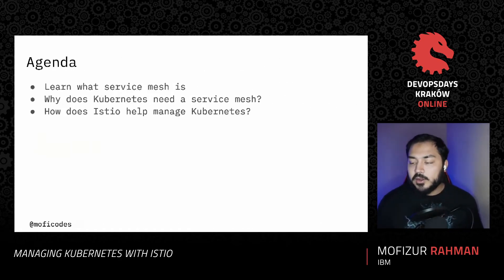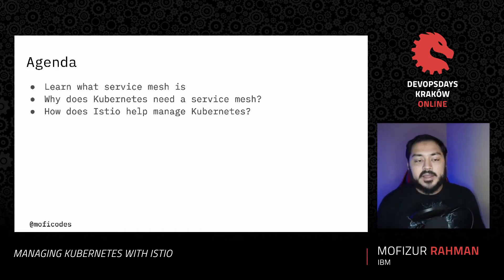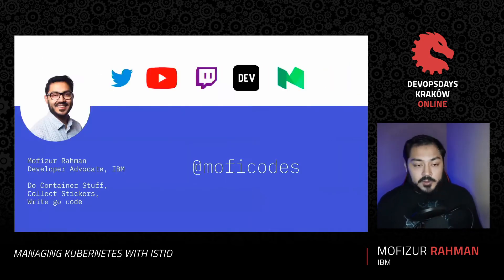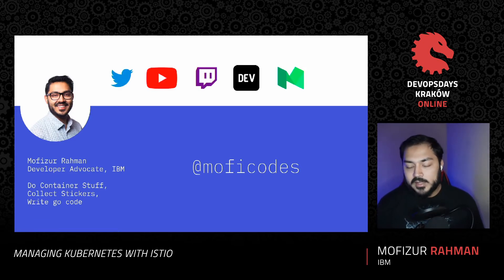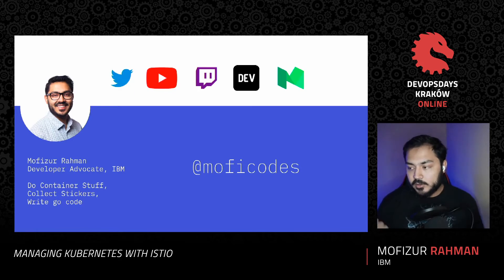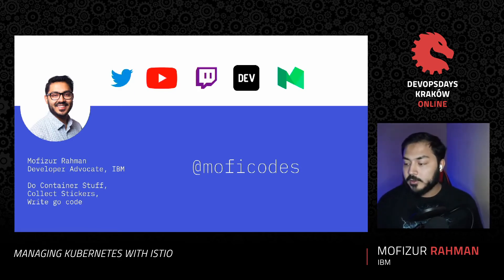So what are we going to learn today? We're going to learn what a service mesh is, why Kubernetes needs a service mesh, and finally how Istio helps manage Kubernetes. My name is Mofi. I'm a developer advocate at IBM. I also do a lot of container stuff and write Go code. I can be found anywhere on the internet at Mofi Codes — Twitter, YouTube, Twitch, Dev, Medium — you name it, at Mofi Codes.